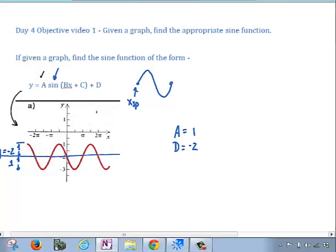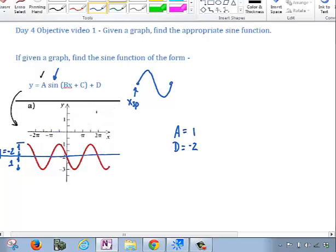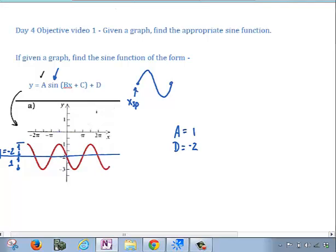So, you're looking for the x value, and when I look at that, I'm going to change my graphing colors to green. I see a starting point right here, and I'm going to just estimate or say that it's exactly at negative pi. So, I'm going to write down over here my starting point is equal to negative pi.